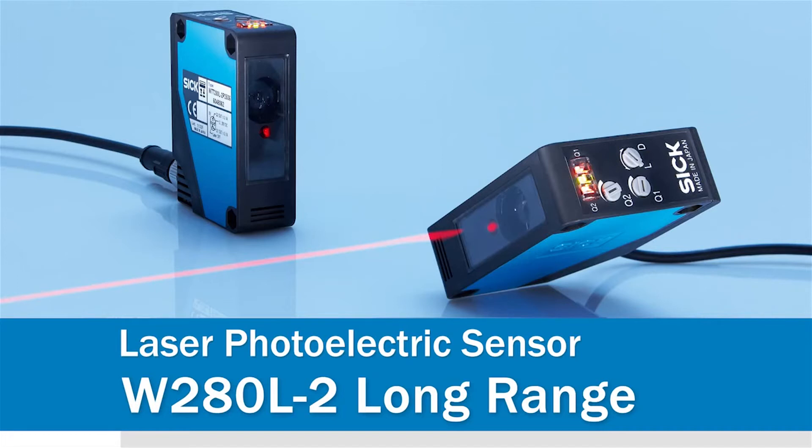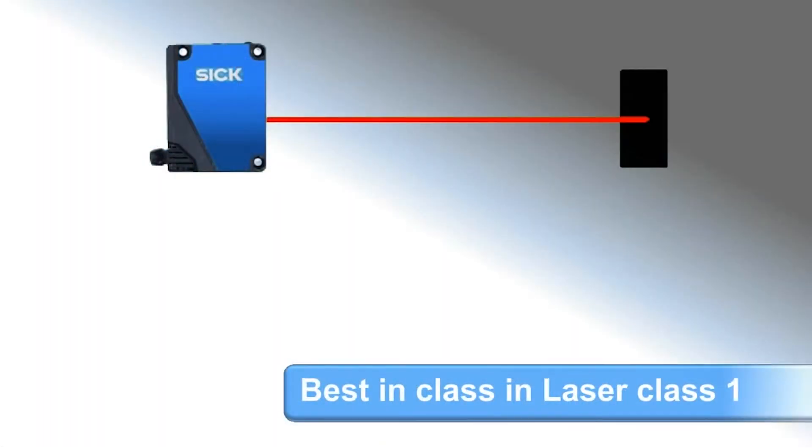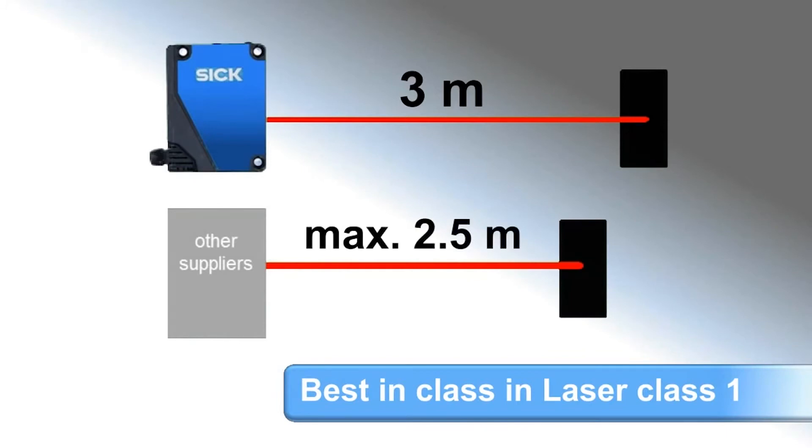W280 Long Range, the new laser sensor. The W280 Long Range can handle the largest of sensing distances, detecting black targets at up to 3 meters, compared to other suppliers who can only reach 2.5.